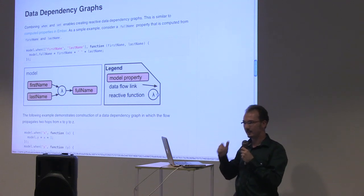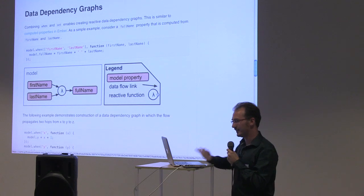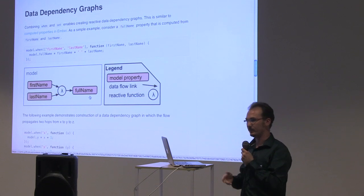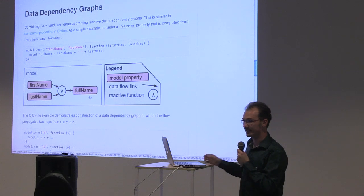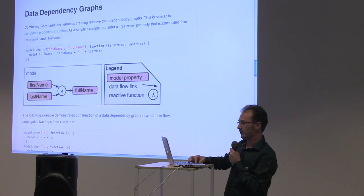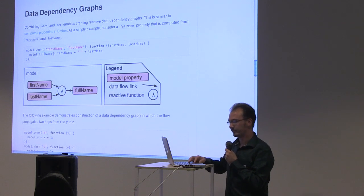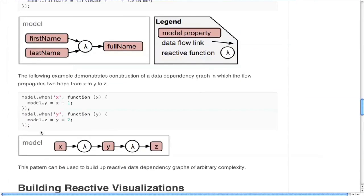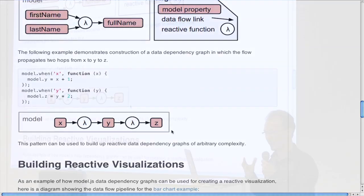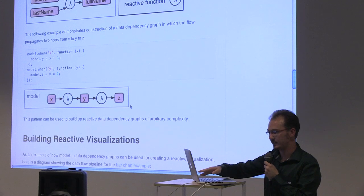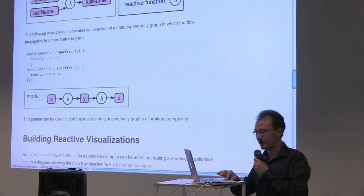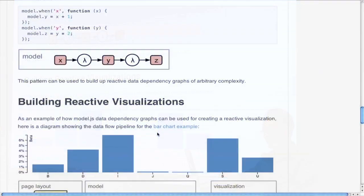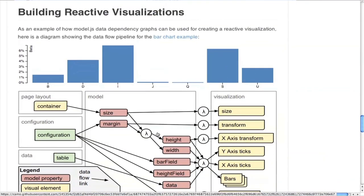This is part of the model.js library I made — basically the same as Backbone but only the model part, with a cleaner API for getting and setting values. Instead of calling model.set and model.get, you can access properties directly as though it were a plain JSON object, but the library still listens for changes using defined properties with setter and getter functions. This basic pattern can be used to create data dependency graphs — it's from the world of functional reactive programming and data flow programming. For example, when first name and last name change, update the full name. And this pattern can create data flow graphs with multiple hops.